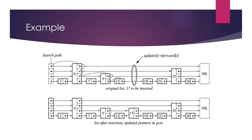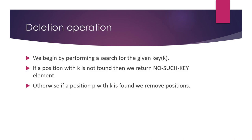This is an example for the insertion operation. We have a skip list with elements 3, 6, 7, 9, 12, 19, 21, 25, and 26. Now I want to insert element 17. As it is an ordered dictionary, 17 is placed between 12 and 19. At first, at the bottom, 17 is placed. After flipping a coin it comes up heads, so we move to the next level. Here 17 is inserted successfully.